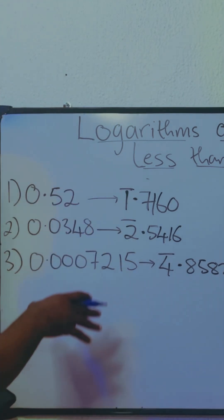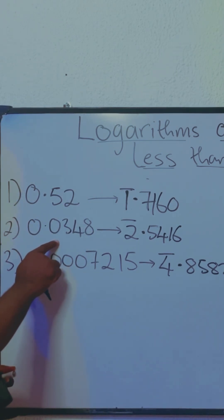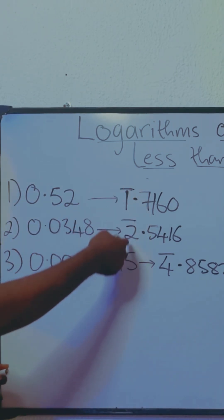So that's how to find the logarithms using your calculator or even using your four-figure table. All you need to do is count how many zeros before the first digit. That indicates what will be in your characteristic.